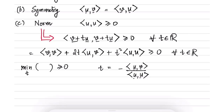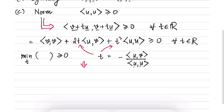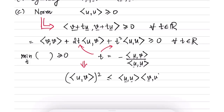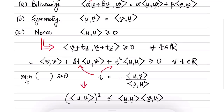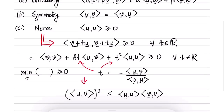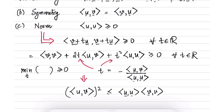Substituting this minimizing t back into the expression yields exactly the Cauchy-Schwarz inequality: the inner product of u with v squared is less than or equal to the inner product of u with u, times the inner product of v with v. The general Cauchy-Schwarz inequality follows directly from the three properties of the inner product — nothing else is needed. If these inner product norms correspond to a norm of interest, we can write: the inner product of u and v is less than or equal to the norm of u times the norm of v.